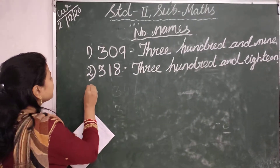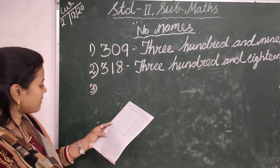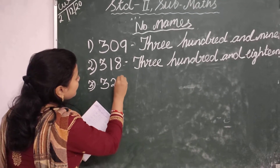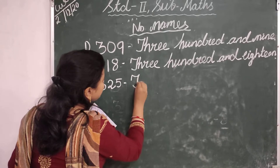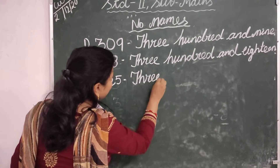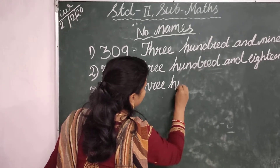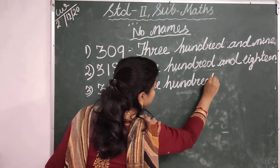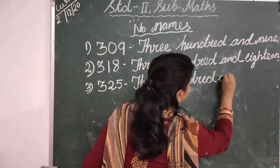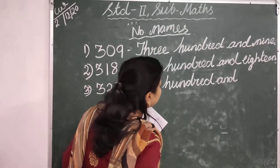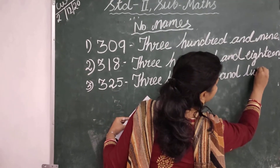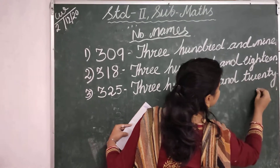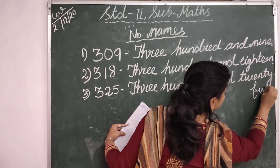Then your number is 325. Three hundred and twenty-five. T-H-R-E-E H-U-N-D-R-E-D and T-W-E-N-T-Y F-I-V-E.